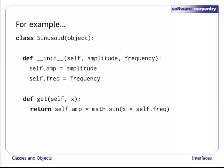For example, here's a class called sinusoid that doesn't do interpolation at all. Instead, it stores the amplitude and frequency of a sine wave. When it's asked for the signal's value at a point, it calculates it rather than looking it up.